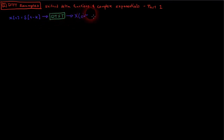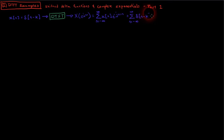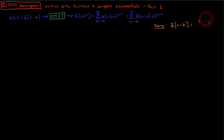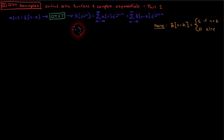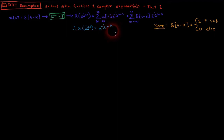Let delta of n minus k be the input to the DTFT. Plug the input function into the discrete time Fourier transform equation and simplify. Note that delta of n minus k is 0 except when n equals k, when it is 1. Therefore, we can disregard the summation except for the case when n equals k. We are left with the result that capital X of e to the j omega is equal to e to the negative j omega k.